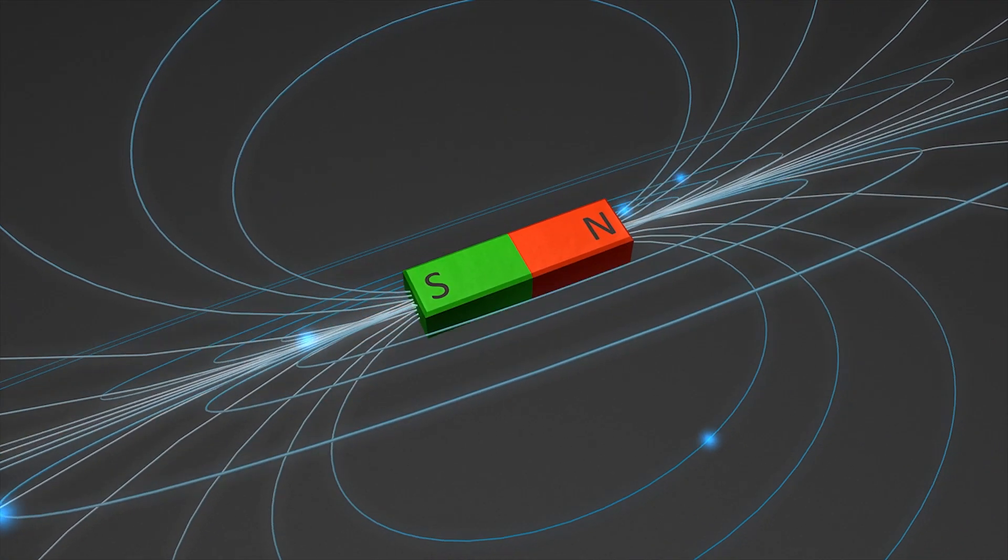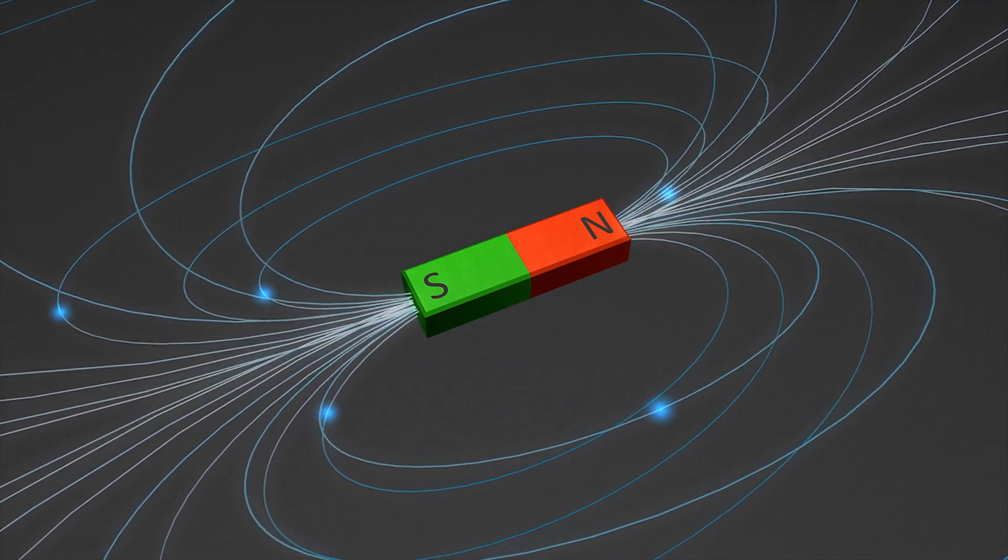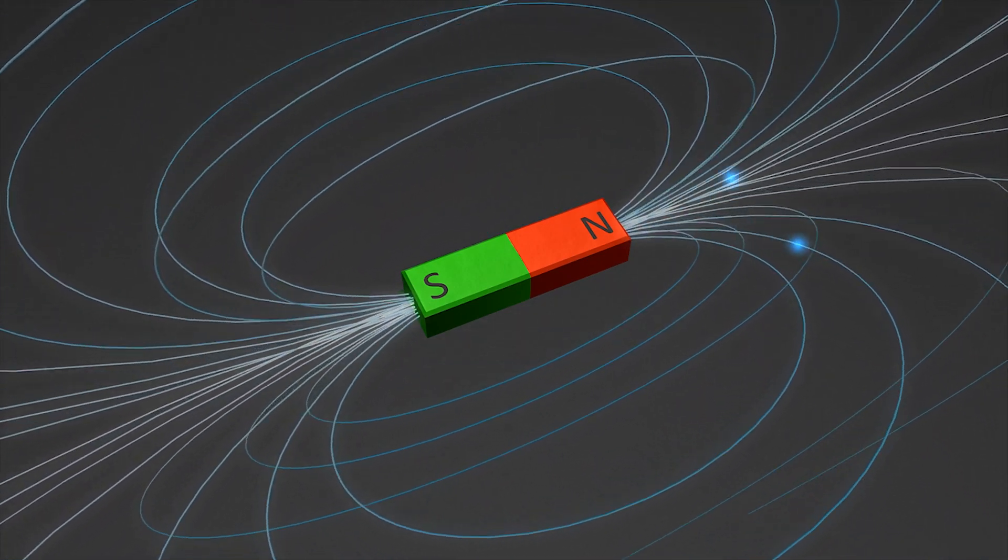AMR sensors are able to measure the direction of a magnetic field as long as a minimum saturation field condition is met. Unlike GMR or TMR sensor technologies, AMR sensors are also not damaged by large magnetic fields.